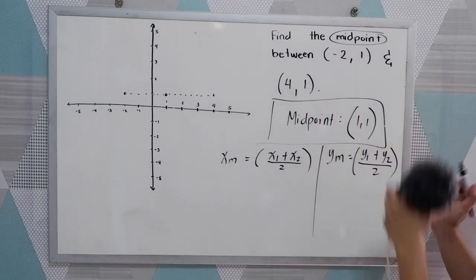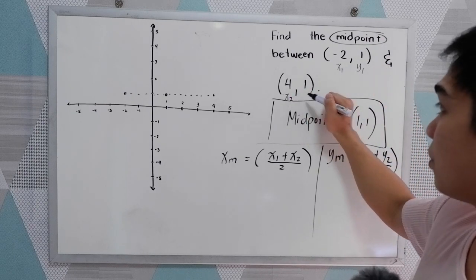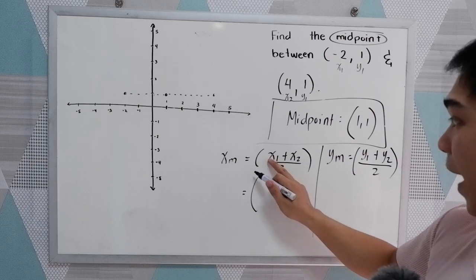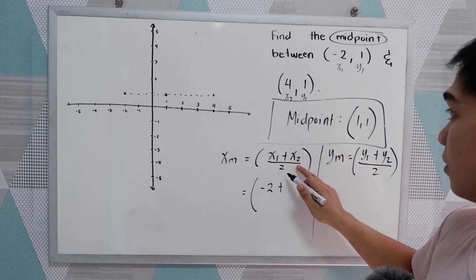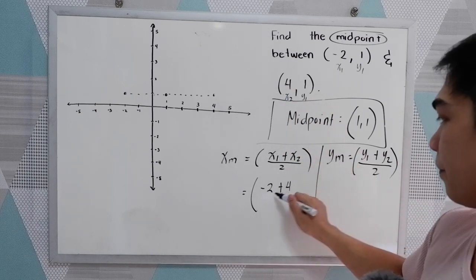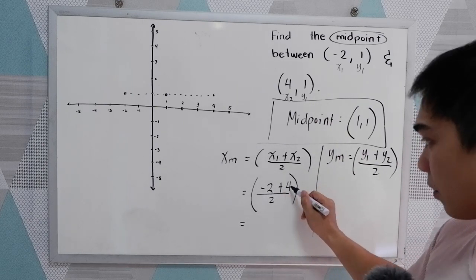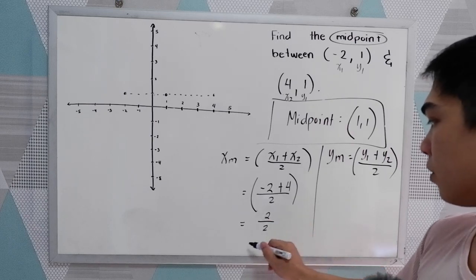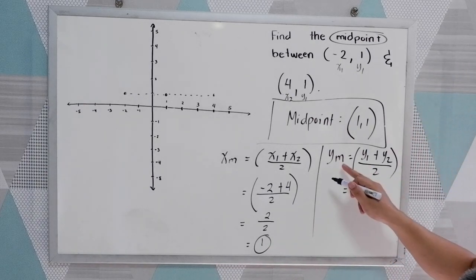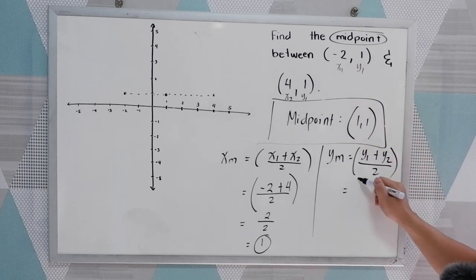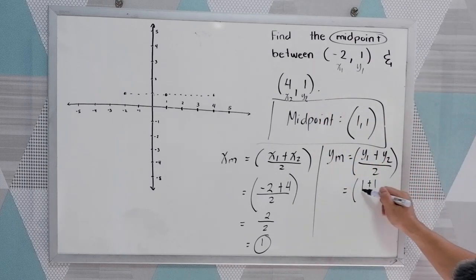Now let's check if we will get the same answer using the same given. This is our x sub 1, y sub 1, and x sub 2, y sub 2. So our x sub 1 is negative 2, plus x sub 2 which is positive 4, divided by 2. And for y: y sub 1 is 1, plus y sub 2, which is 1, all over 2.